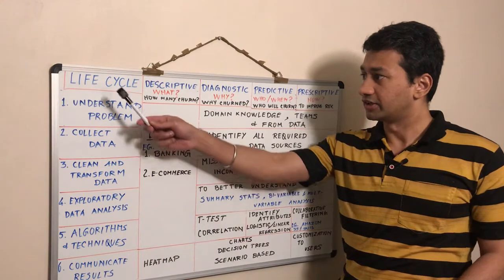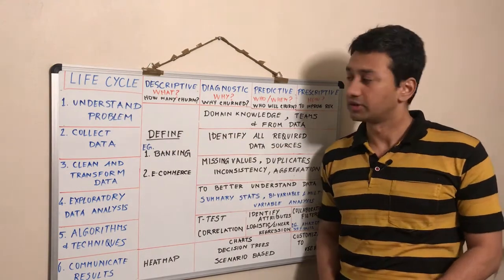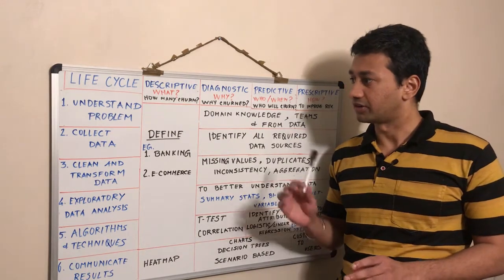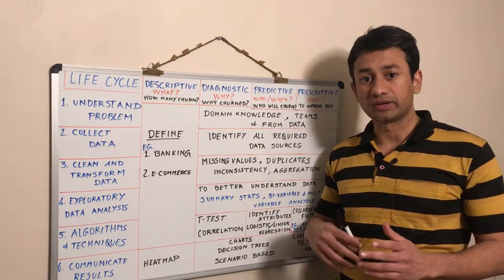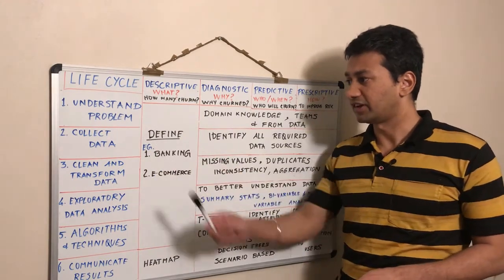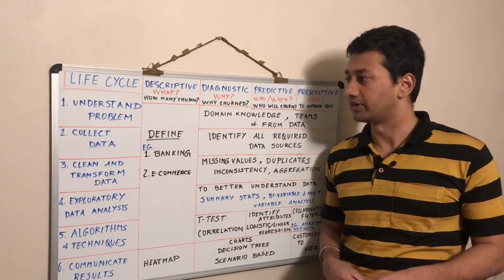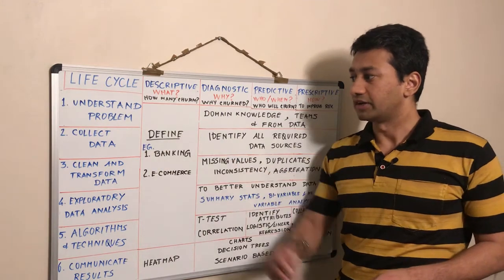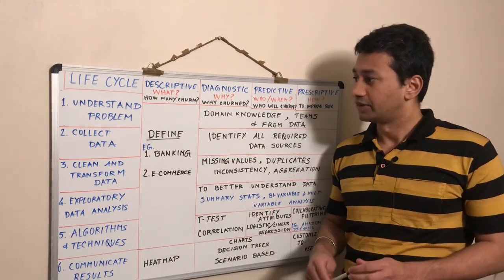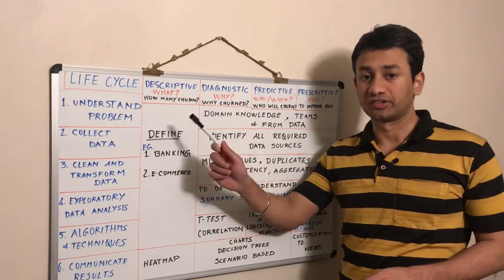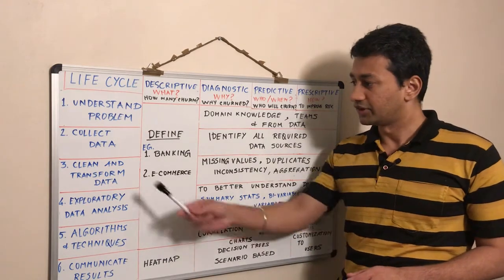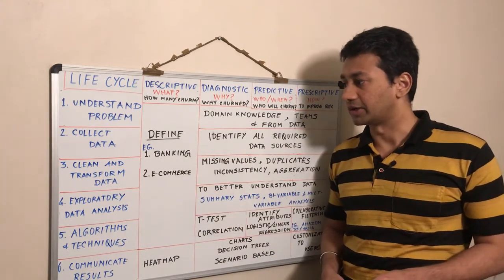So let's take the life cycle of a data science project. The first step is understanding the problem. It is really important to spend time and to consider different points of view to best understand the data. The second step is collecting the relevant data. Based on our understanding, it is really important to consider all the data sources that are applicable to the data science problem that we are solving.